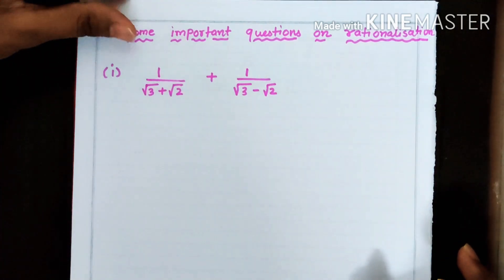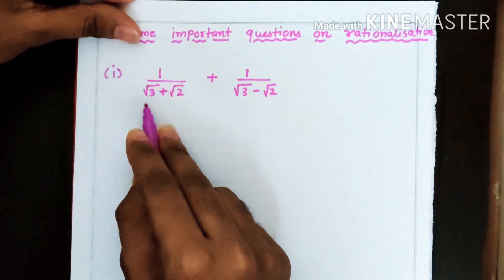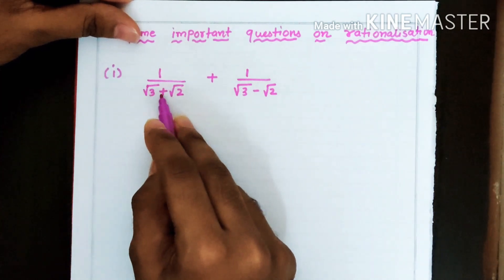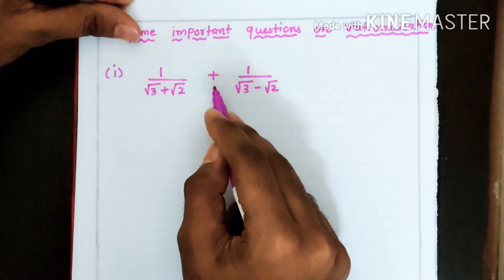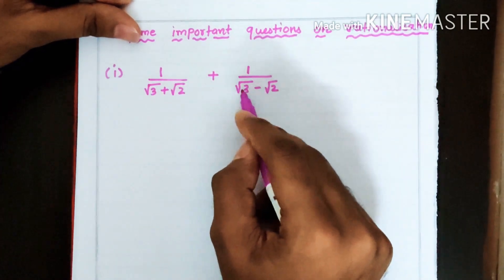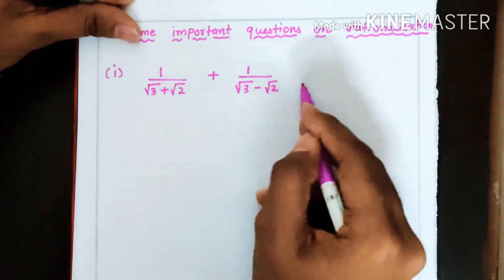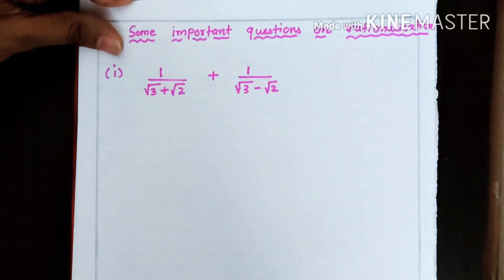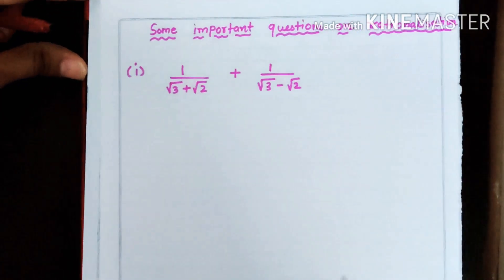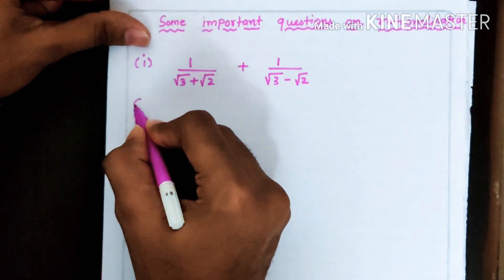The first question is: 1 upon (√3 + √2) plus 1 upon (√3 − √2), and we need to rationalize this. Let us start the solution.